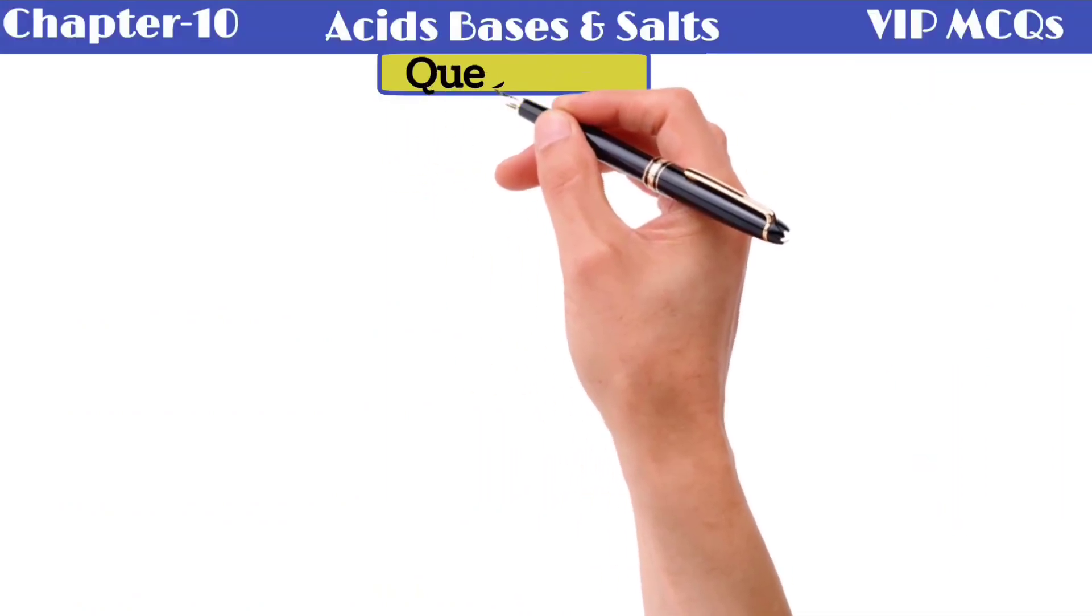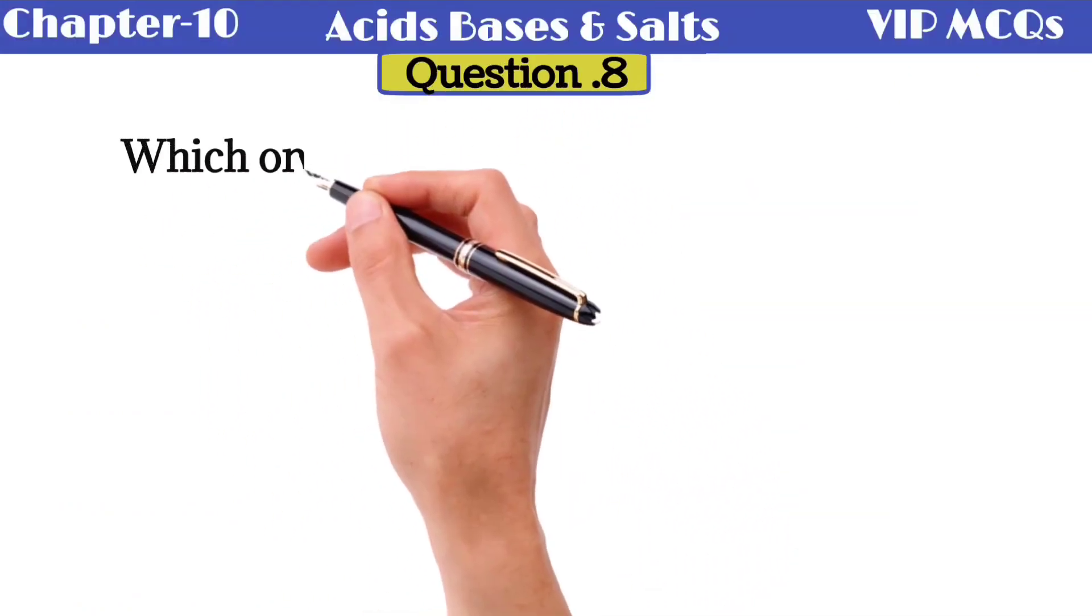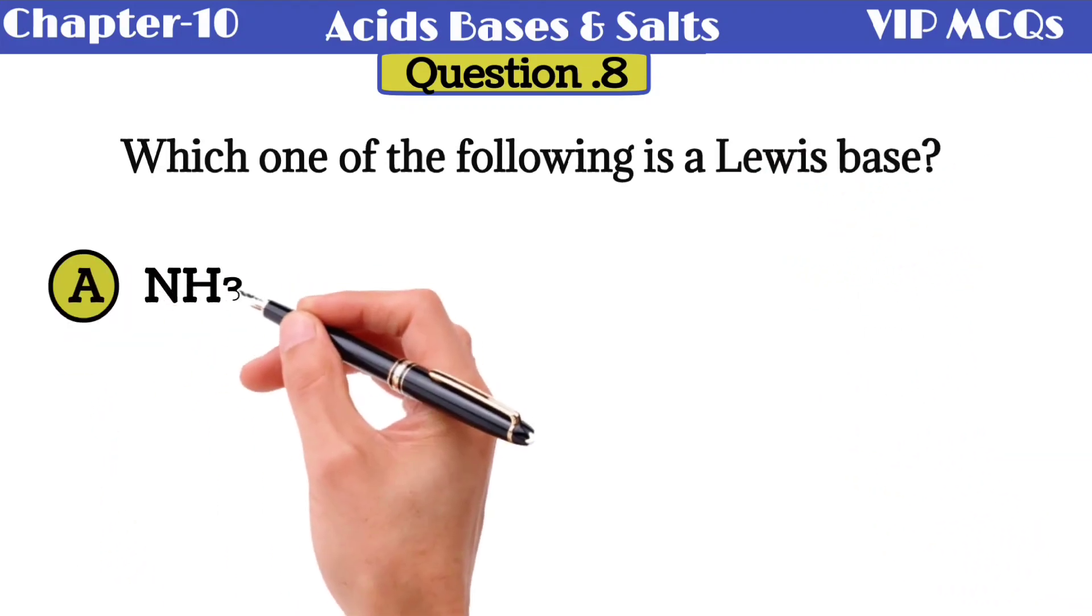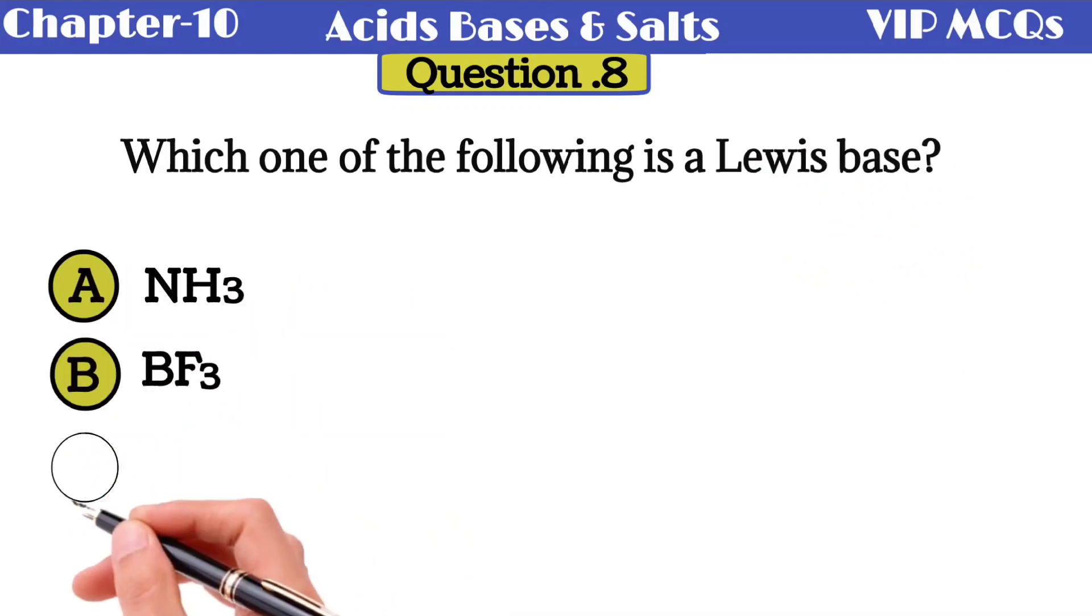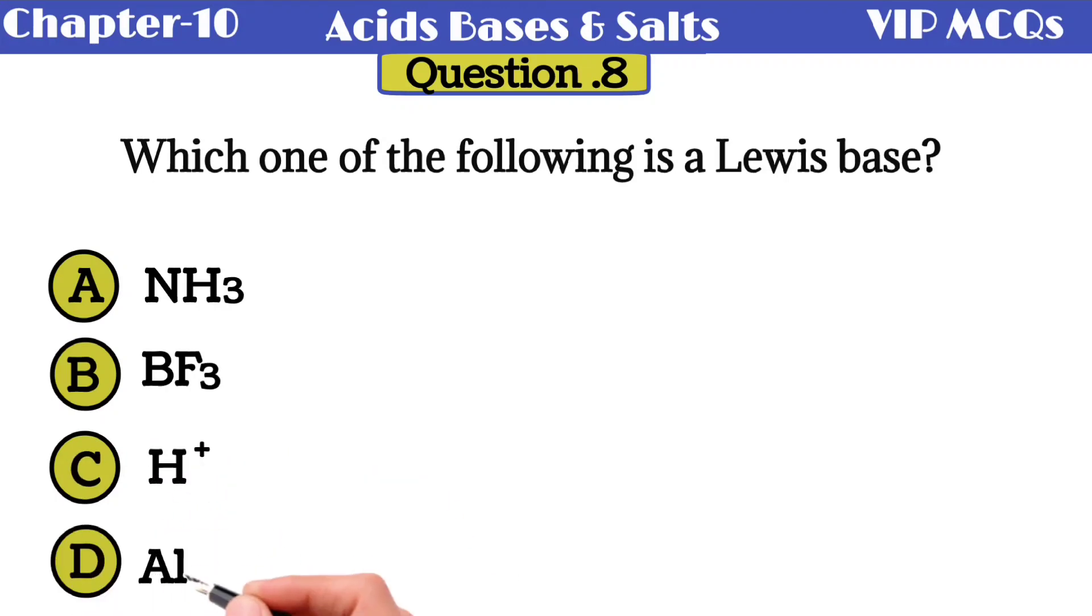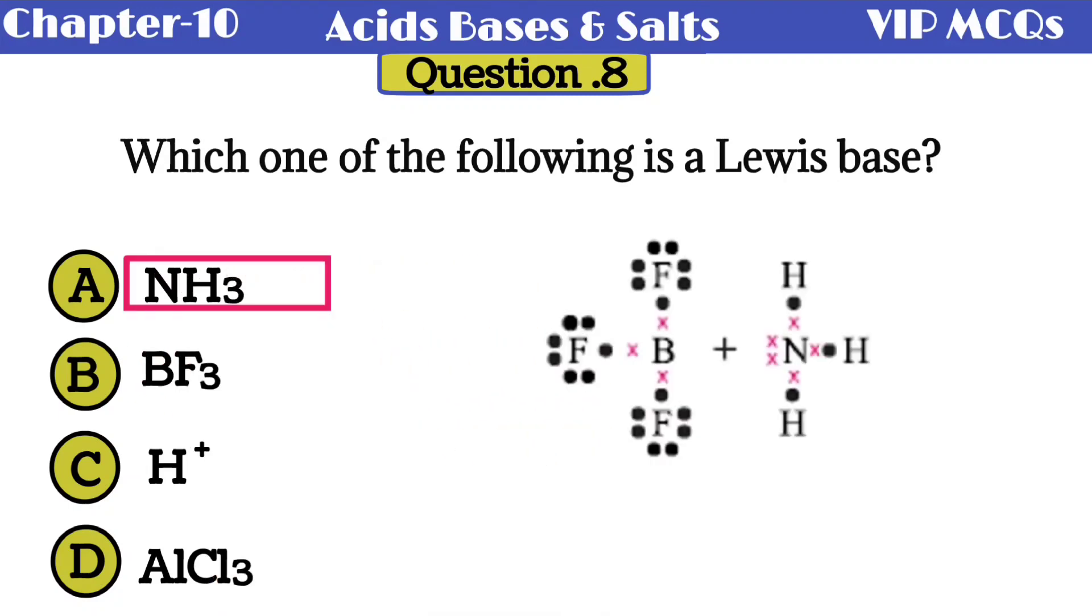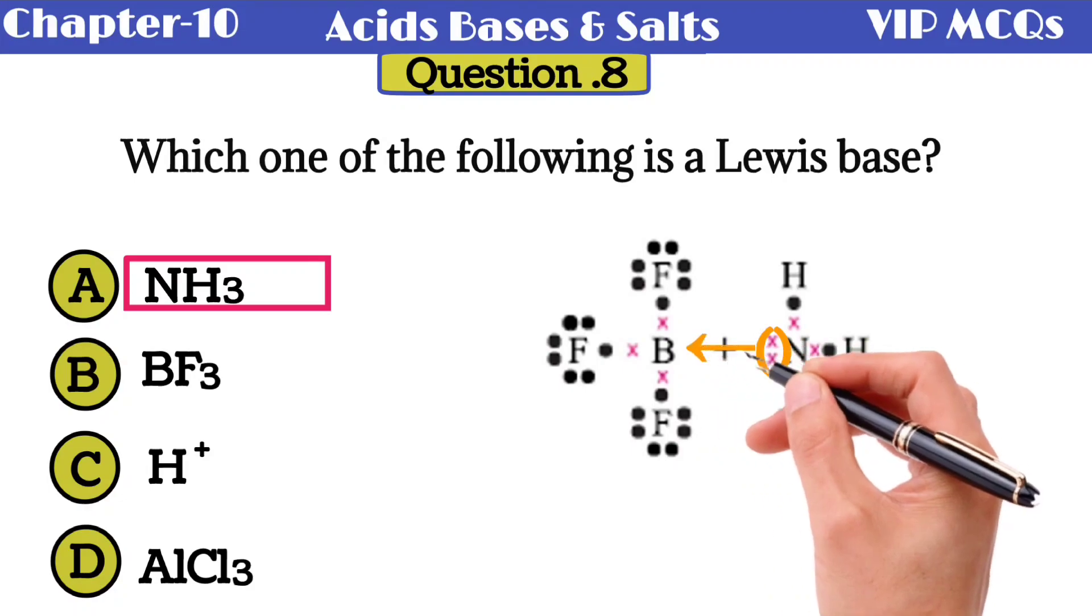Question number 8: which one of the following is a Lewis base? Option A is ammonia, option B is boron trifluoride, option C is hydrogen ion, and option D is aluminium trichloride. The correct option is ammonia. The nitrogen in ammonia has a lone pair of electrons that can donate to other substances. That's why ammonia is a Lewis base.